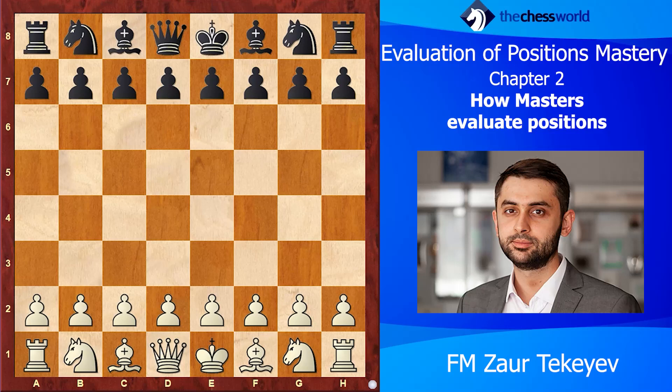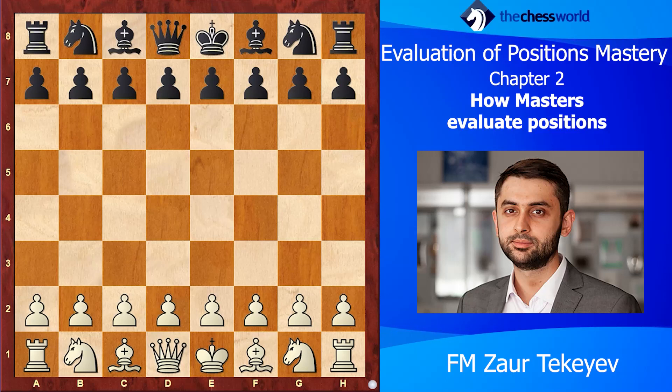What's also interesting about grandmasters is that they don't go through the list consciously — like, 'let's think about king safety, then material, let me count how many pawns I have.' They don't do that at all. Sometimes they do, but only in really messy and difficult positions where they struggle to find a move and try to help themselves that way.